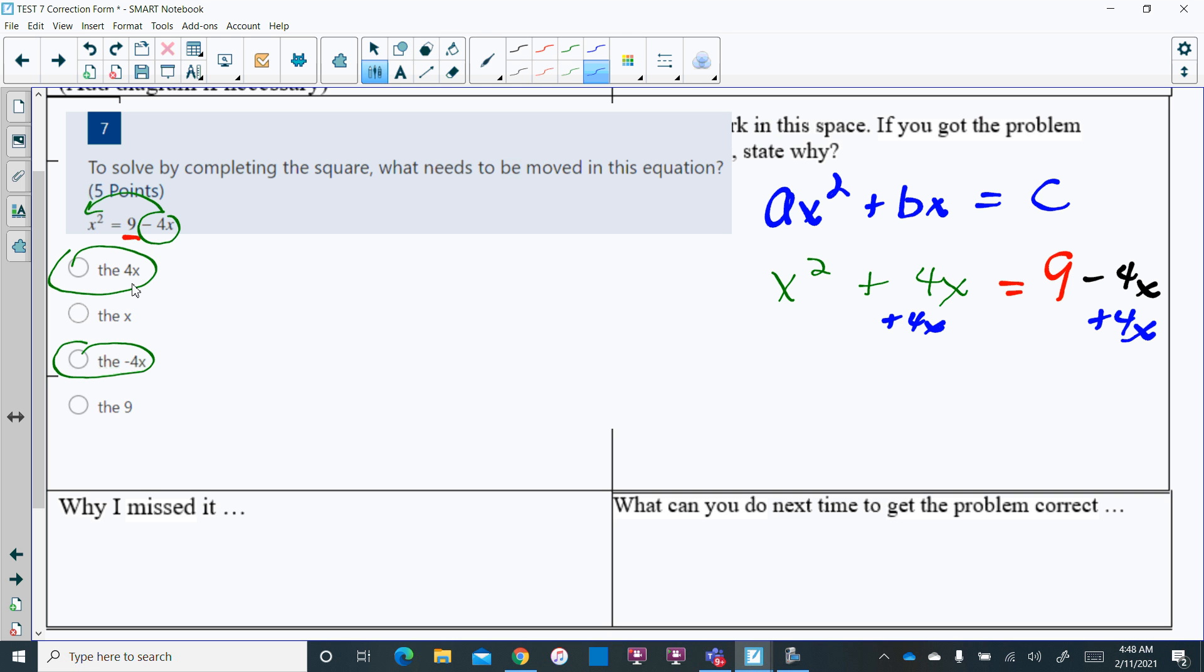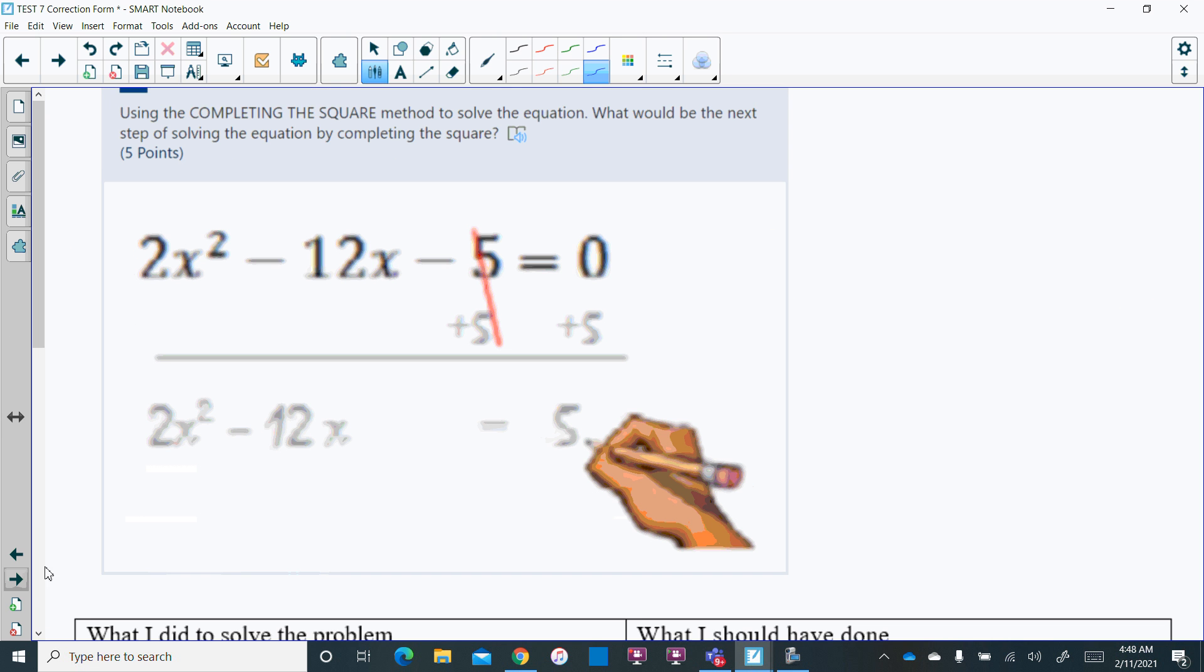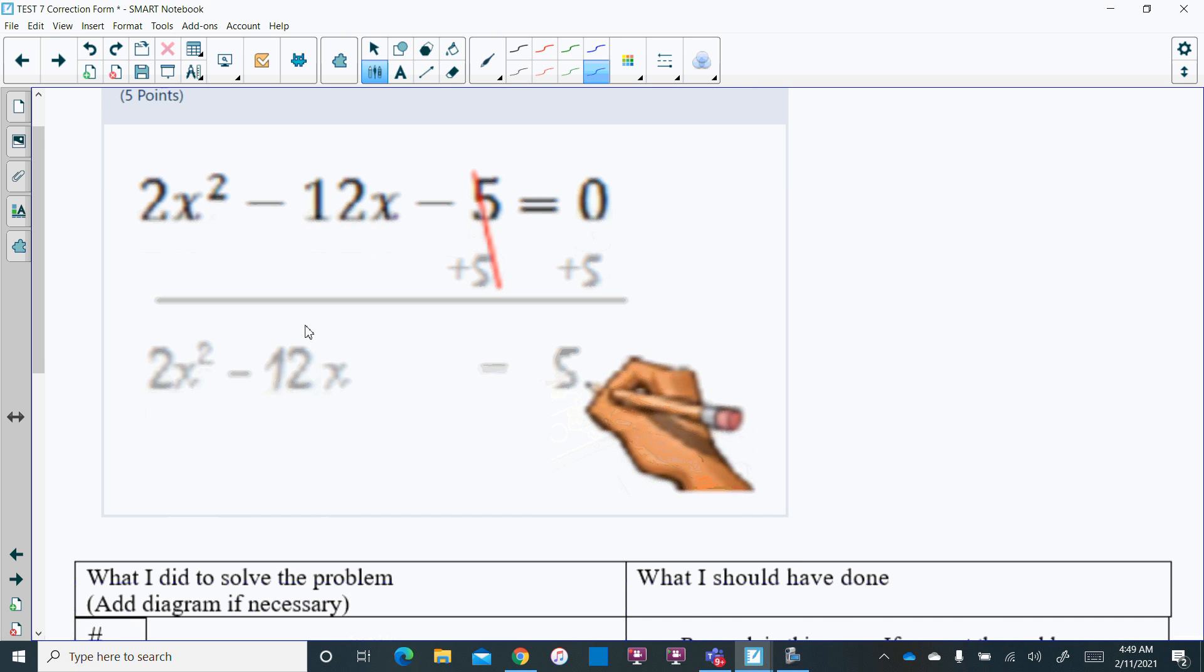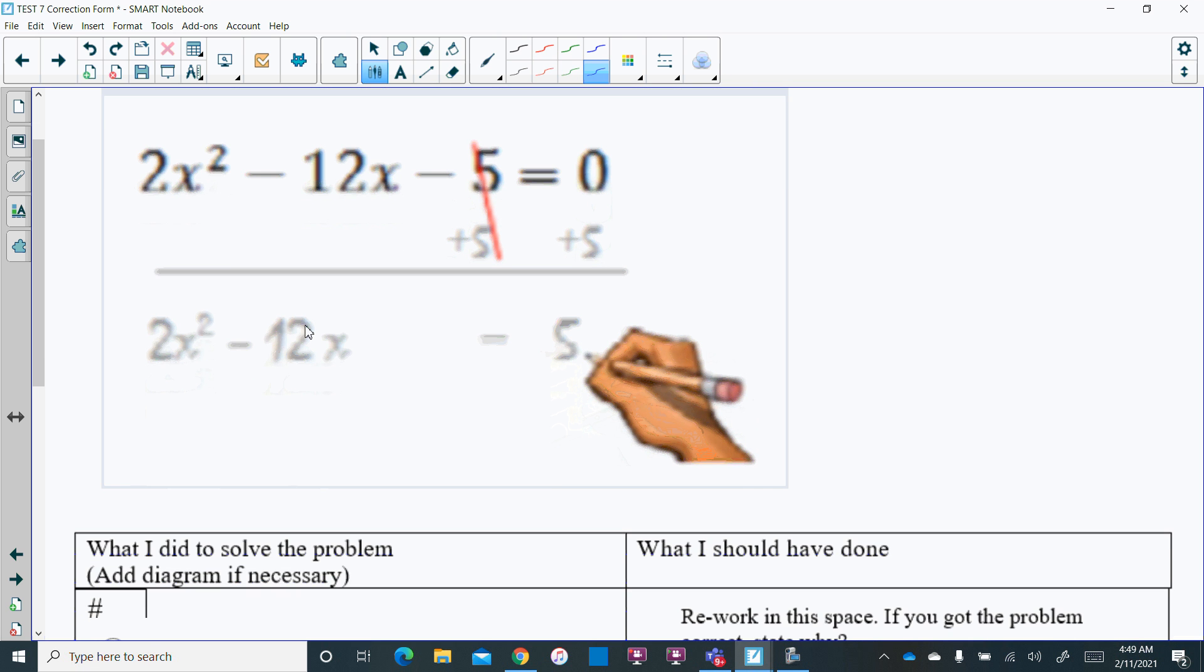Number eight, this is also in the set. What would you need to do next? We are rearranging, but step one says to also divide if necessary. When we're doing completing the square, it needs to be x squared plus bx equals c. It needs to be in this form.